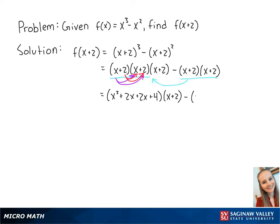So this becomes minus x squared plus 2x plus 2x plus 4. By combining these like terms, we get x squared plus 4x plus 4 times x plus 2 minus x squared plus 4x plus 4.